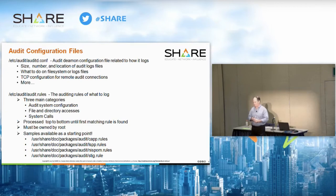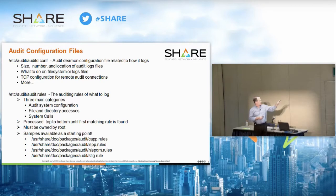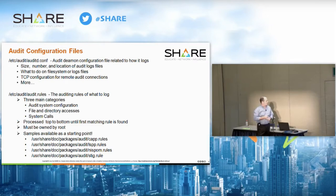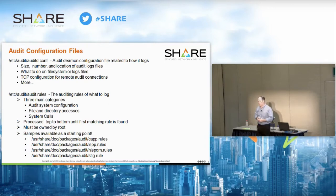In auditd.conf you'll find size, number of log files, and maybe TCP configuration if you're doing remote log file transmission in real time. The rules file has three main categories of rules: system configuration, file and directory access, and system calls.